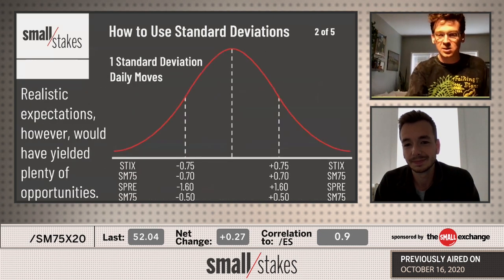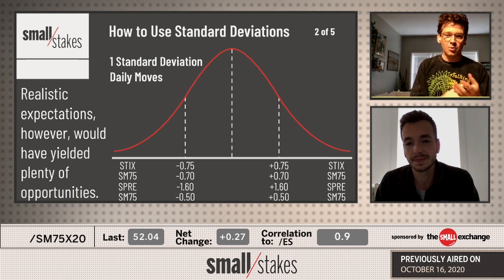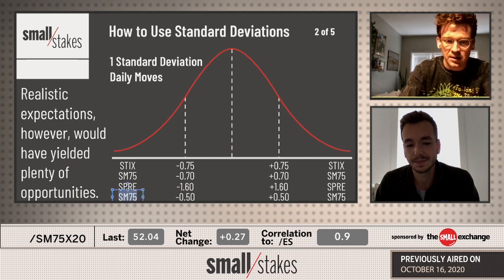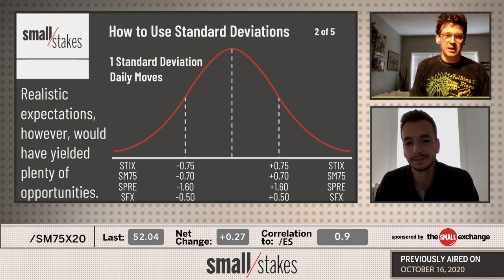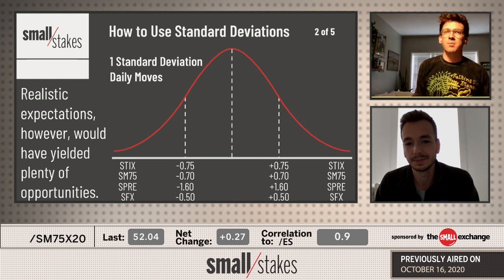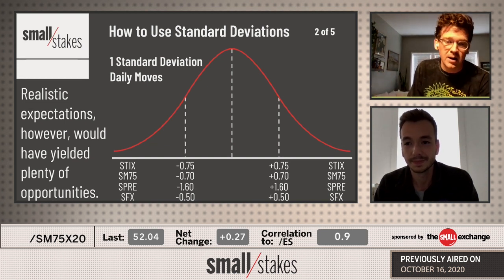There are plenty of those examples, but what's nice with the futures products that the Small Exchange provides is they're diversified markets. So you get away from that one-off single stock or one-off commodity or one-off currency in the SFX case. It allows for more back and forth when you diversify the markets like that. When you're using standard deviations, it's four back-and-forth markets that you can buy or sell intraday, interday, intermonth — whatever the timeframe is.